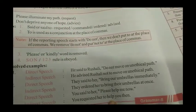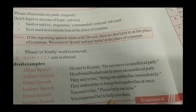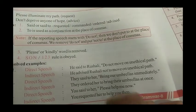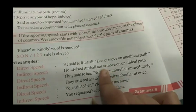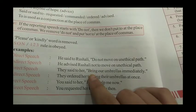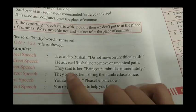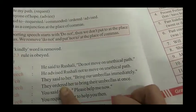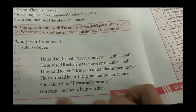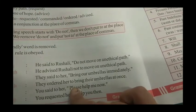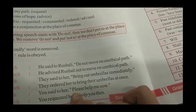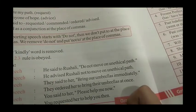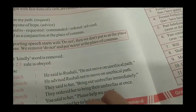So these were the examples of imperative type — type number 3. इसके rules भी हमने पढ़ लिए हैं। यहाँ do not को remove करके not to use कर रहे हैं। 'They said to her, bring our umbrellas' — यहाँ order है तो said की जगह ordered लगेगा। 'You said to her, please help me now' — यह request है तो requested लगेगा। So here we have completed type number 3. In the next video we will study type number 4.